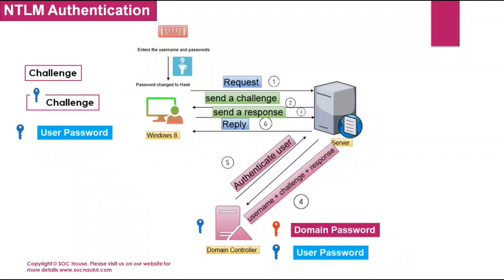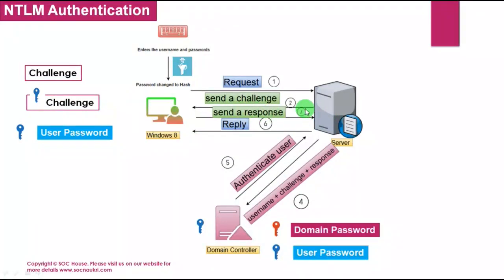When the user enters the username and password, the client machine sends a request to the server. The server gives a challenge to the client. The client uses the hash key generated from the password, encrypts the challenge with that hash, and provides the encrypted data back to the server as a response. To decrypt the data, the same key — the hash of the password — must be used, and the user password is stored in the Active Directory of the domain controller. The server then sends the username, challenge, and response back to the domain controller.